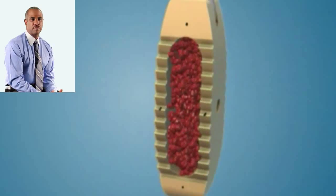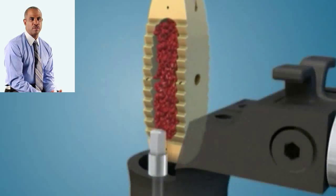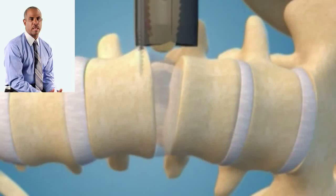This is the spacer filled with bone graft going in. You can see how the spacer lifts the spine and corrects the alignment.